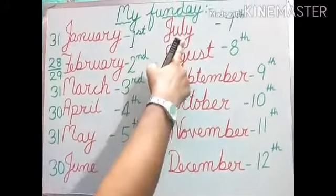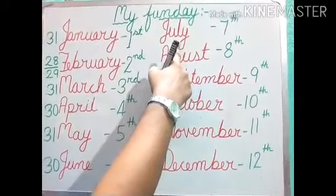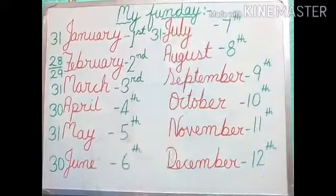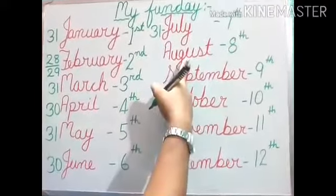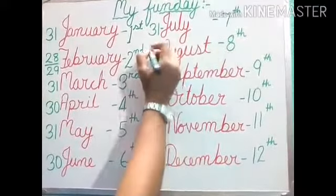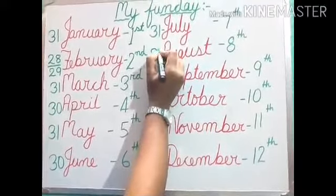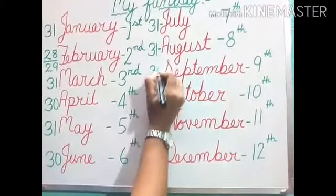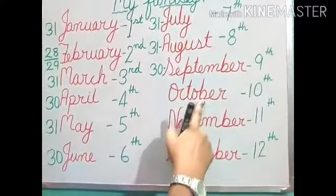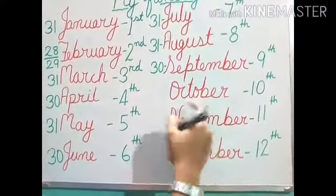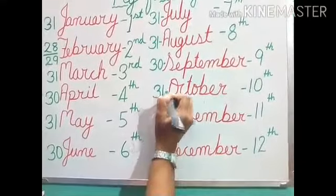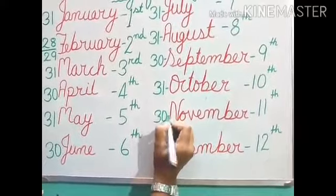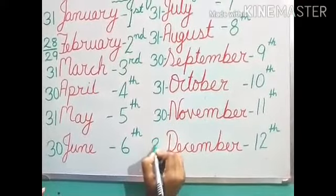Now, July — can you tell me? Yes, 31. August is also 31. Then September is 30. October is 31. November is 30. And December is 31.